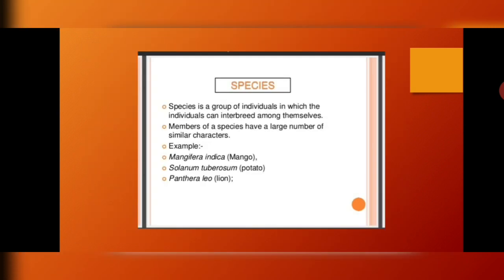Let us now see how these taxons are arranged. The most basic and smallest taxon is known as a species. A species is a group of individuals that can interbreed among themselves and have similar characteristics. For example, Mangifera indica — the species is indica; all Mangifera indica are the same mangoes. Solanum tuberosum — tuberosum is the species name. Panthera leo — leo is the species name and it is the scientific name of the lion.